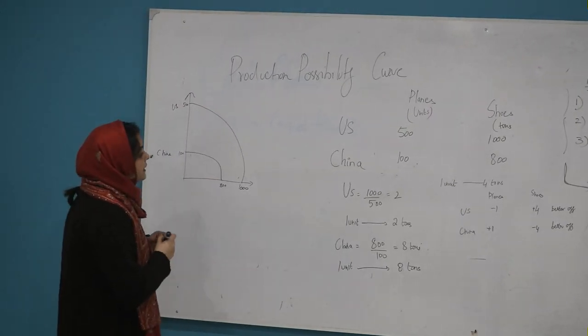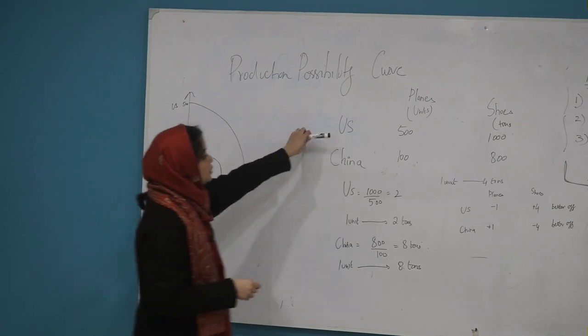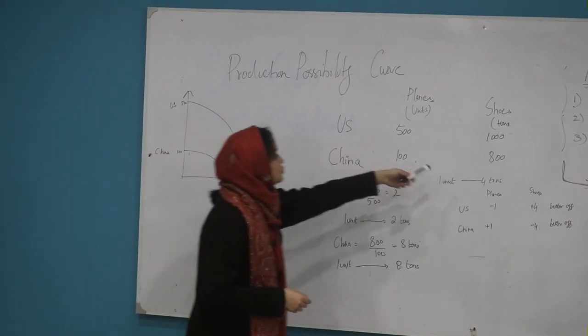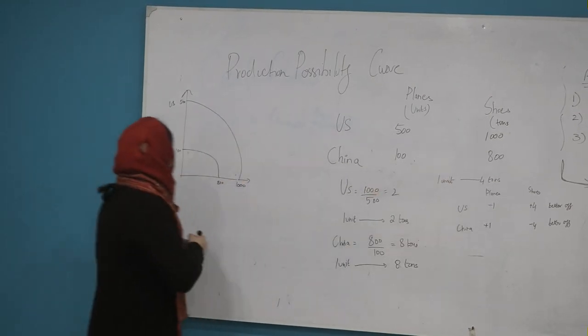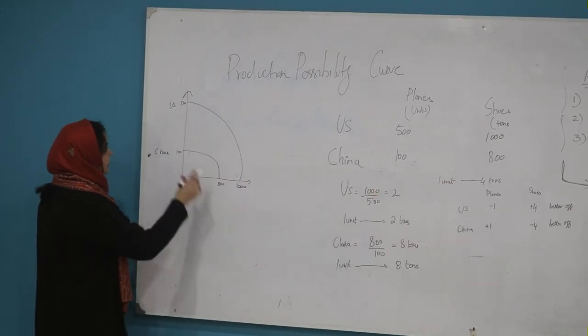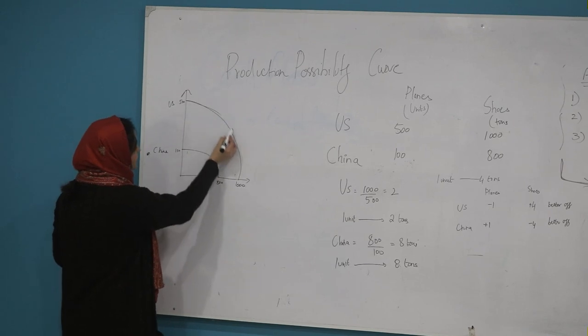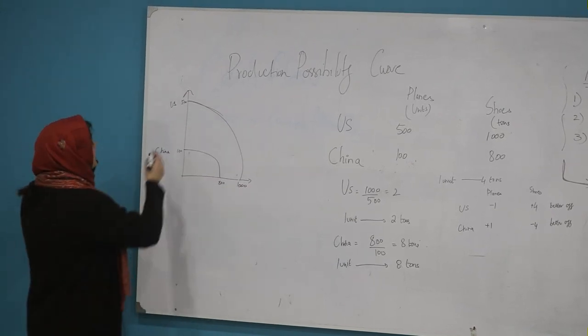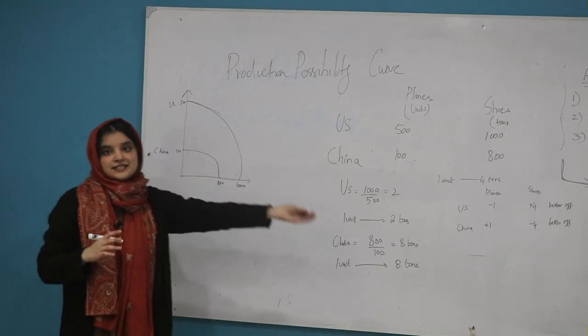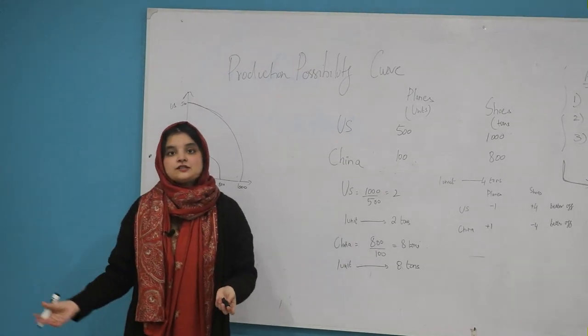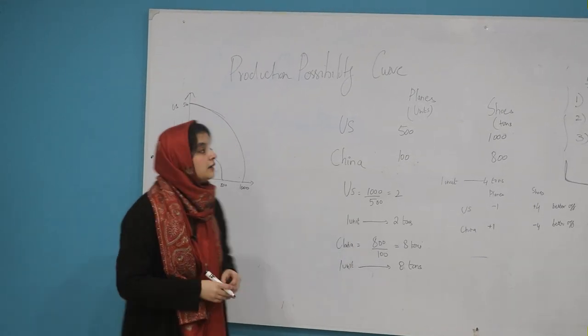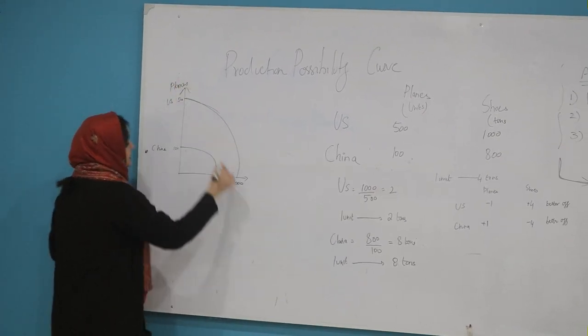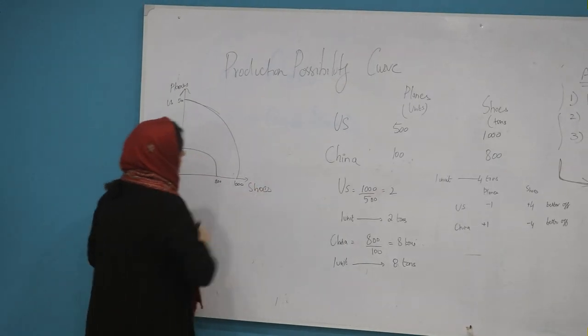So let's say there are two countries, US and China. US is making planes and shoes and China is also making planes and shoes. If you look at this graph, we know that the production possibility curve is always downward sloping. That means that if you are making one thing, you will give up the other thing.